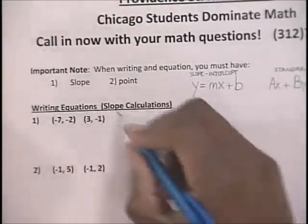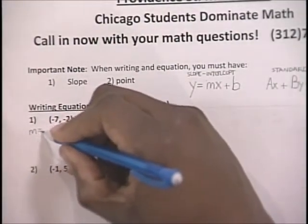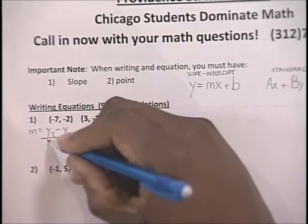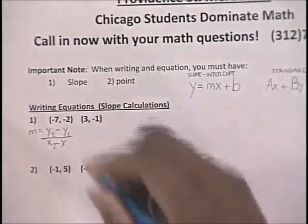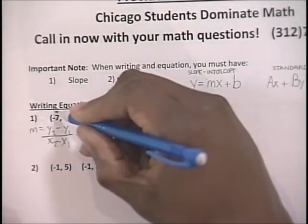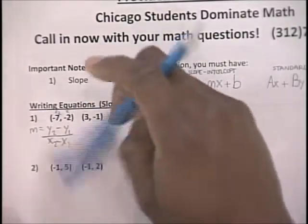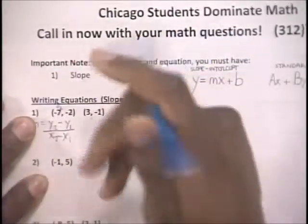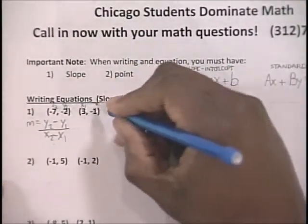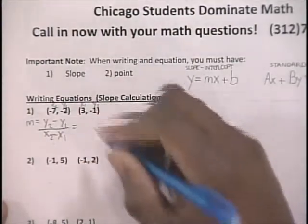The first slope we're going to calculate is between two points. The slope equation is y2 minus y1 over x2 minus x1 — that's the equation we're going to use. Let's label the first point x2, y2 and the second point x1, y1.